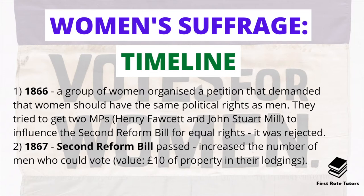A key date to begin with is 1866, when a group of women organised a petition demanding that women should have the same political rights as men. They tried to get two MPs — Henry Fawcett, the husband of Millicent Fawcett, and John Stuart Mill — to influence the Second Reform Bill to get more equal rights for women; however, this was rejected. The Second Reform Bill, which was passed in 1867, actually increased the number of men who could vote. Men who could vote under this bill had to show they owned £10 worth of property in their lodgings.